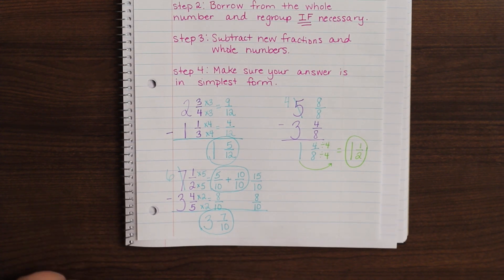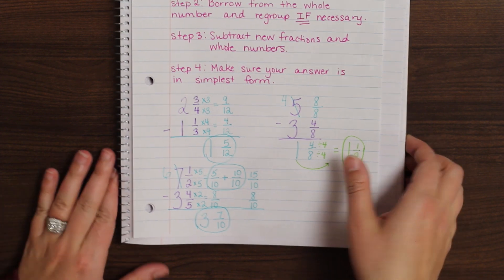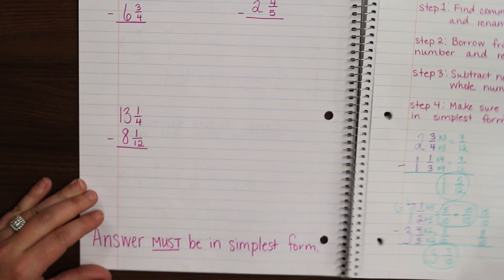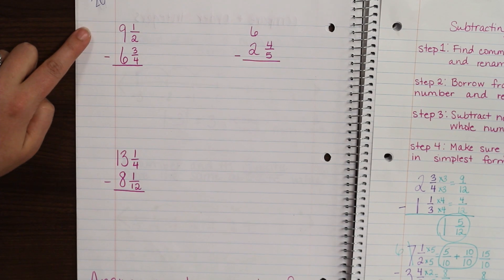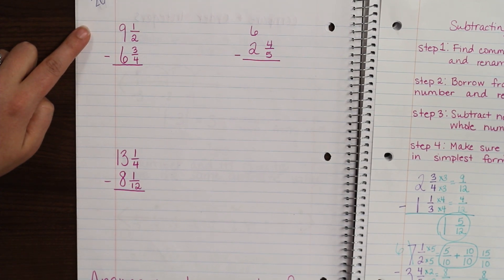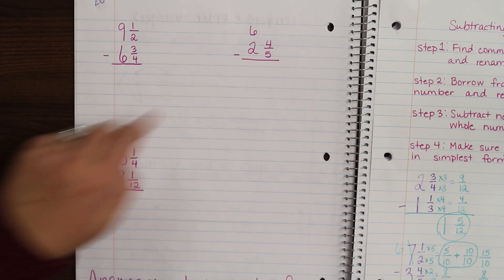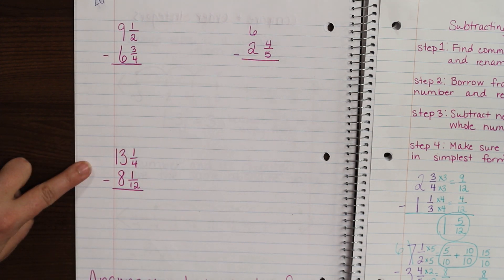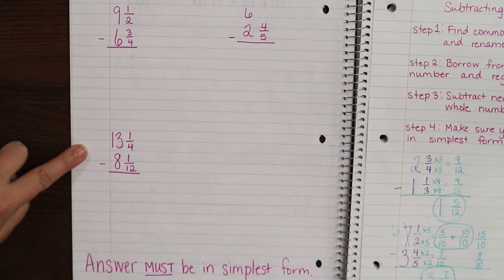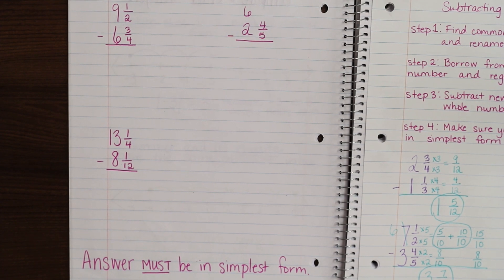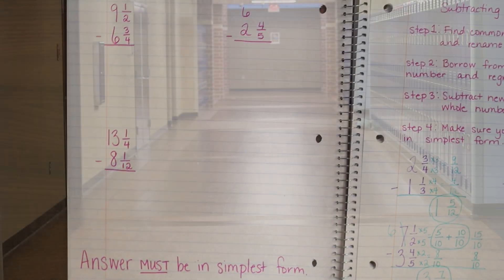That is subtracting mixed numbers. Now let's see some examples for you to do on your own. On the left side of your notebook, try these three problems: nine and a half minus six and three-fourths; six minus two and four-fifths; thirteen and one-fourth minus eight and one-twelfth. Make sure your answer is in simplest form — that's important for all of our answers when working with fractions.